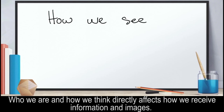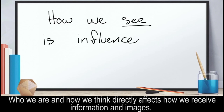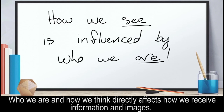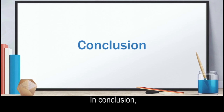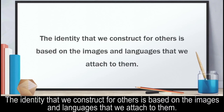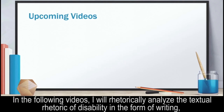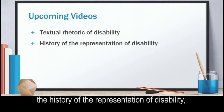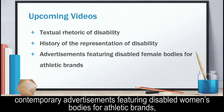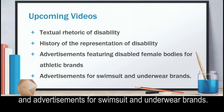Who we are and how we think directly affects how we receive information and images. In conclusion, the identity that we construct for others is based on the images and languages that we attach to them. In the following videos, I will rhetorically analyze the textual rhetoric of disability in the form of writing, the history of representation of disability, contemporary advertisements featuring disabled women's bodies for athletic brands, and advertisements for swimsuit and underwear brands.